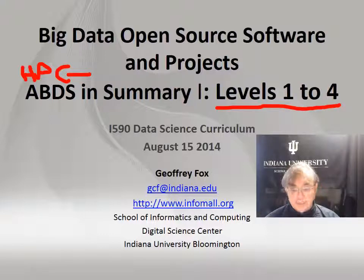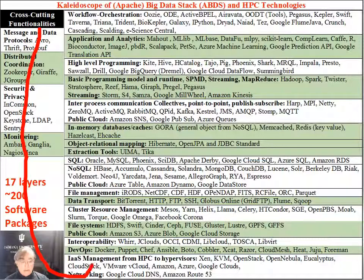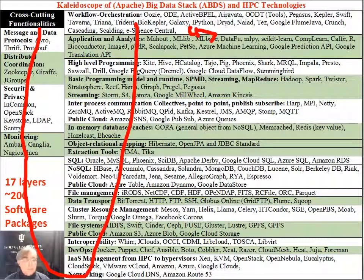These correspond to the cross-cutting levels. Here is the list of all these software packages. We're going to do these four in this presentation, and then in following presentations we're going to look from level five up to level 17. The total number of packages here is over 200, which I keep adding from time to time. It's quite a lot of stuff.